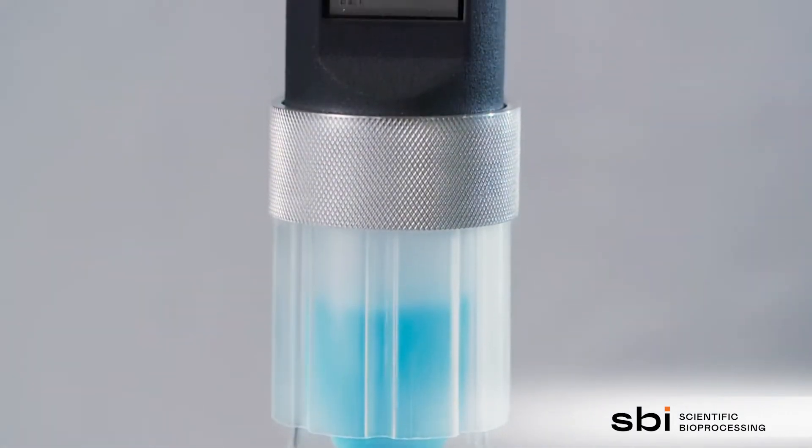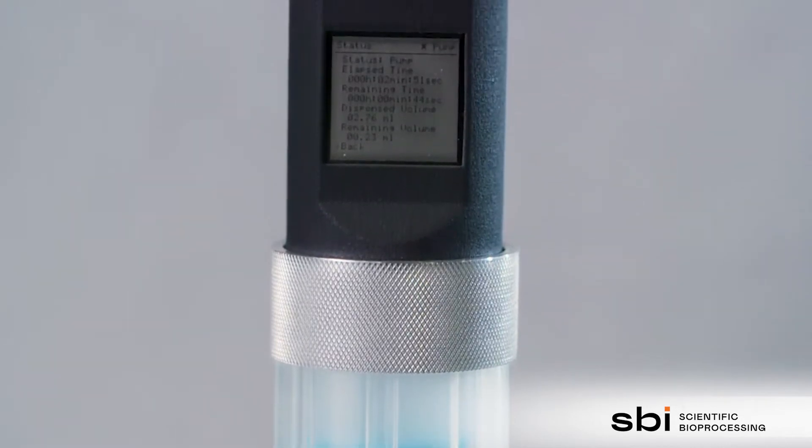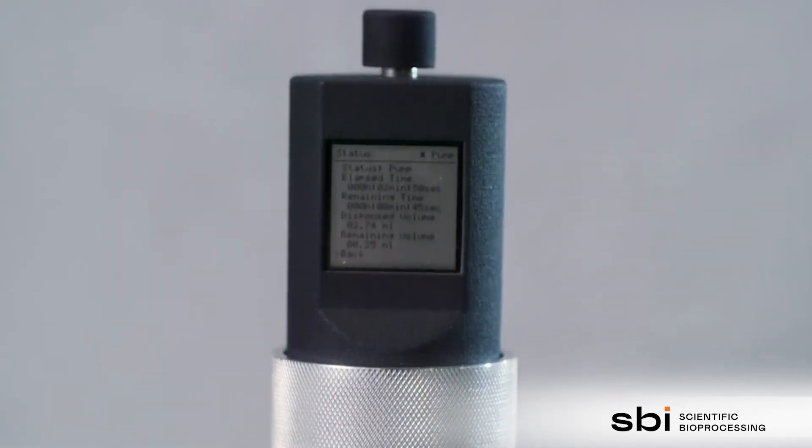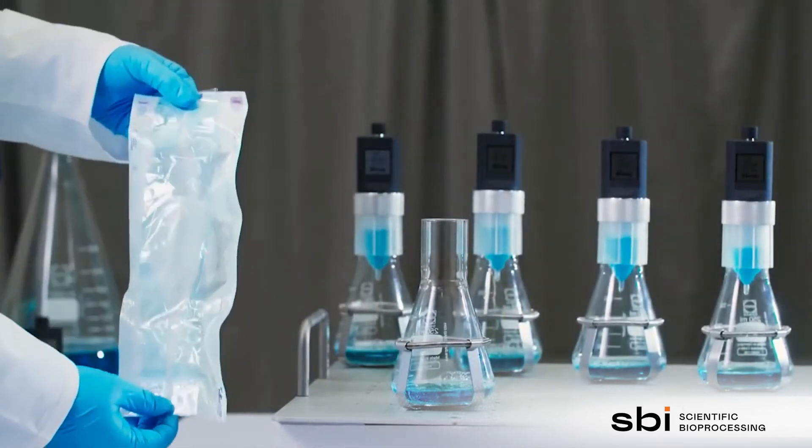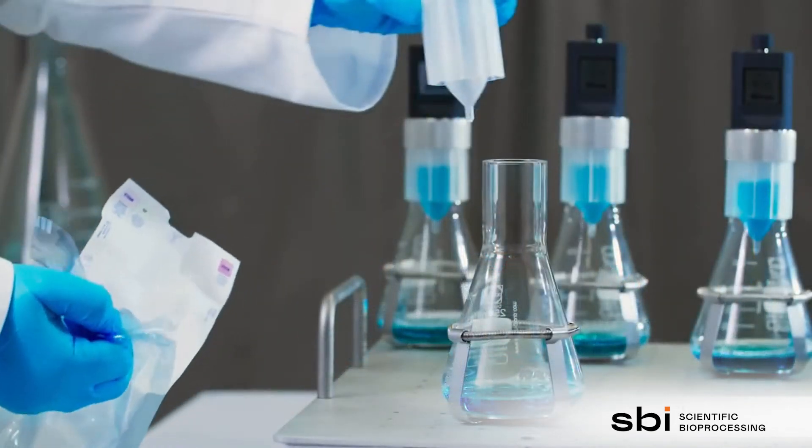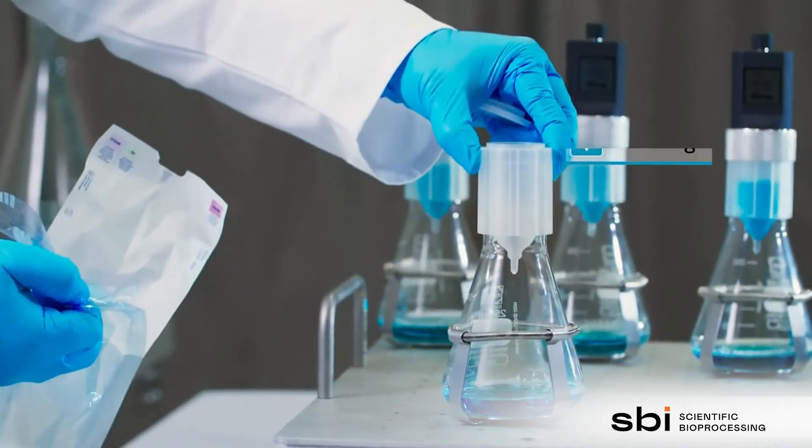It consists of two main components, the LIS cartridge and the LIS drive. The cartridge is a sterile, single-use container in the shape of a shake flask lid.